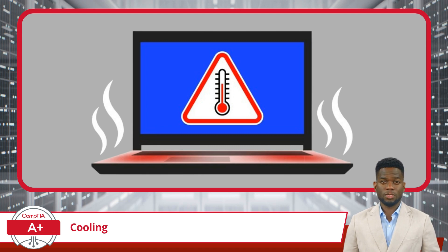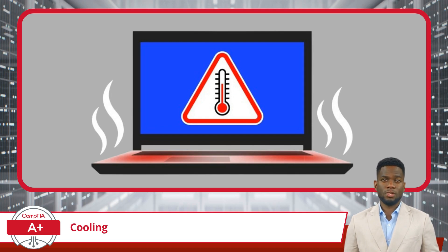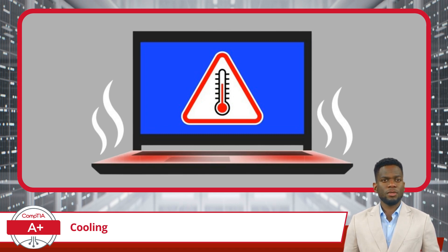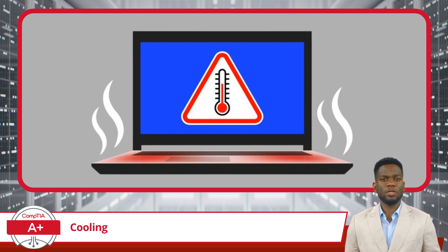Initially, as temperatures rise beyond safe operating limits, the system may throttle down its performance to reduce heat generation, resulting in decreased processing power and slower operation. Continual overheating can cause components such as the CPU, GPU, and motherboard to degrade over time, shortening their lifespan. In severe cases, prolonged exposure to high temperatures can lead to thermal runaway, where components reach temperatures beyond their design limits, causing malfunctions, system crashes, and even permanent damage.